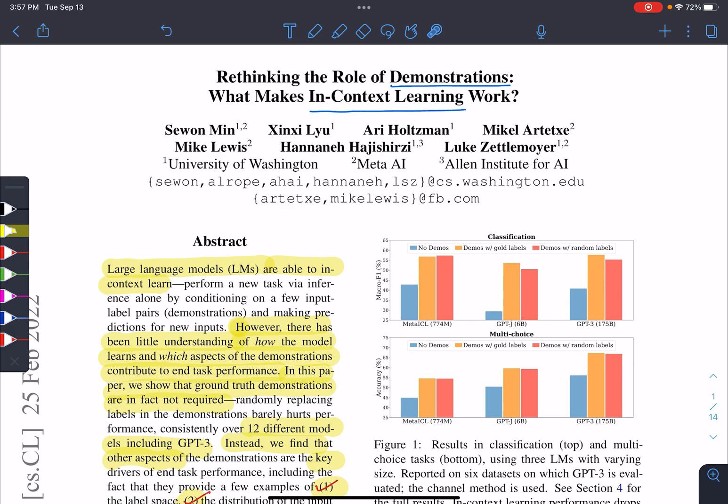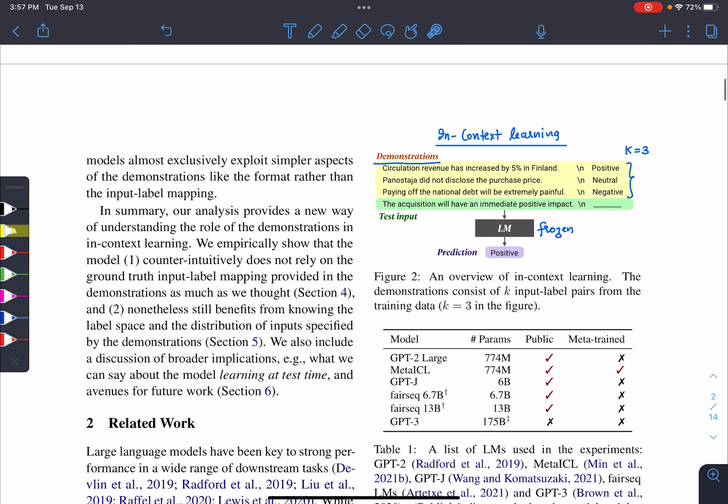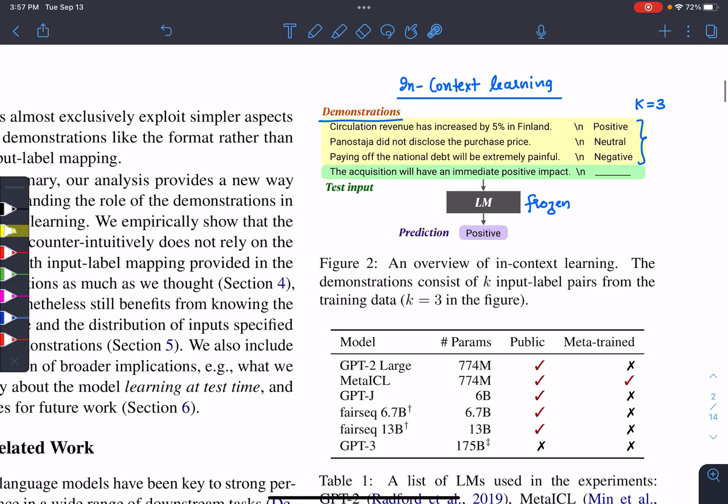Before moving forward, let me give you a brief about what in-context learning is and what are demonstrations. In-context learning is a method where the language model is frozen and it's given a prompt. The prompt consists of examples. Right now, there are three examples, and then there is a test input and the model has to predict the output for this one.